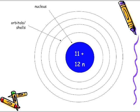Circling around the nucleus, in the first shell, we have electrons. Electrons have a negative charge. The electrons circle around the nucleus. The protons are found in the nucleus, and the electrons circle around that nucleus.